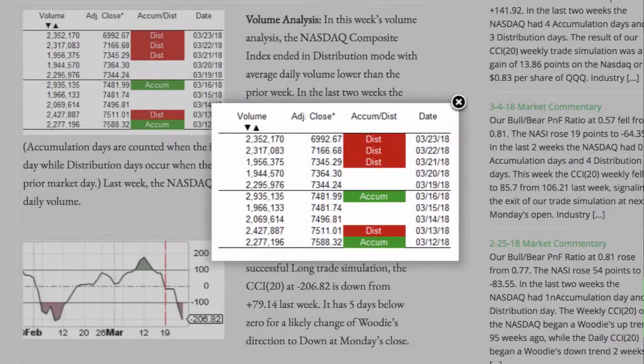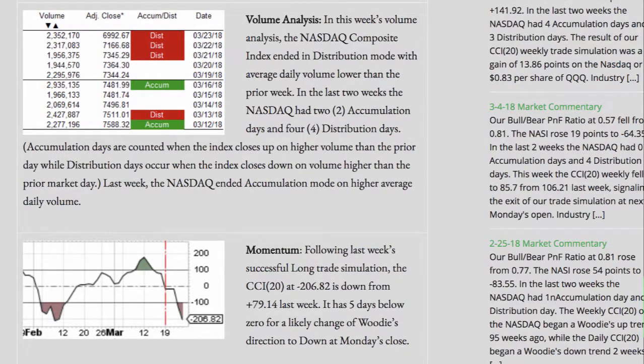In this week's volume analysis, the NASDAQ composite index ended in distribution mode, with average daily volume lower than the prior week. In the last two weeks, the NASDAQ had two accumulation days and four distribution days. Accumulation days are counted when the index closes up on higher volume than the prior market day, while distribution days occur when the index closes down on volume higher than the prior market day. Last week, the NASDAQ ended in accumulation mode on higher average daily volume.